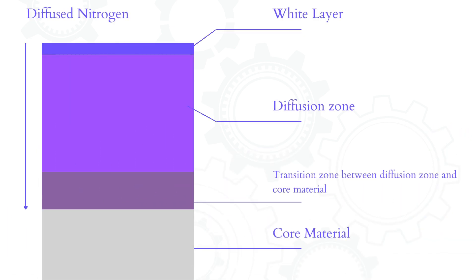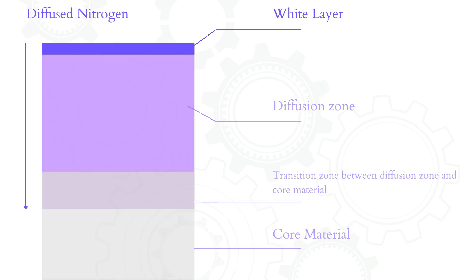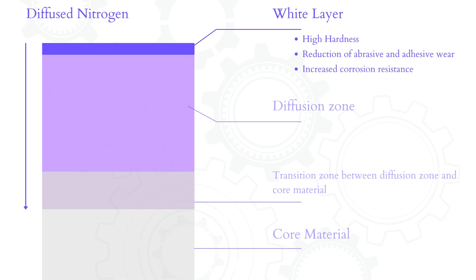This is how a cross-section of a nitrided steel and its layer look like. In most cases, the white layer is the topmost and the hardest part of the entire nitrided layer. It is just a few microns of mainly iron nitrides, and it increases the surface hardness, reduces abrasive and adhesive wear, increases the corrosion resistance, and reduces the friction coefficient of the parts.